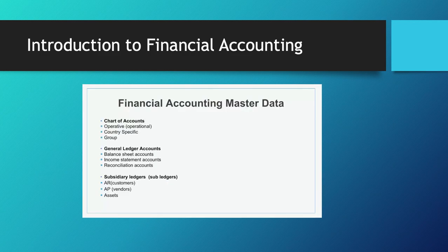The goal for financial accounting is to record the financial impact of business activities. These processes are recorded in the company general ledger. The general ledger includes many accounts, and each account tracks different financial data. For example, some accounts record sales revenue while other accounts record costs.